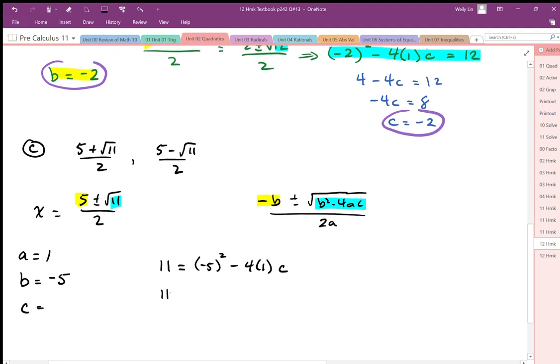And so we get 11 is equal to 25 minus 4c. So we get negative 14 is equal to negative 4c. C works out to 14 over 4, which will simplify to 7 over 2.